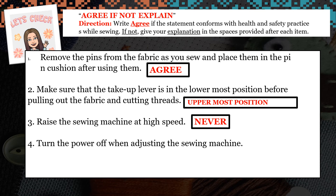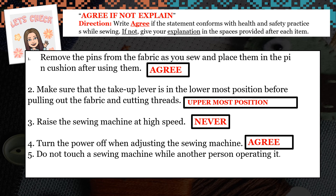Number 4: Turn the power off when adjusting the sewing machine. Agree. Number 5: Do not touch a sewing machine while another person is operating it. Agree.